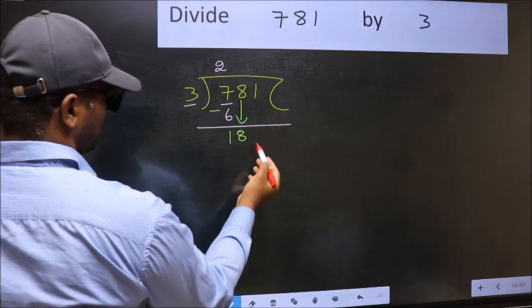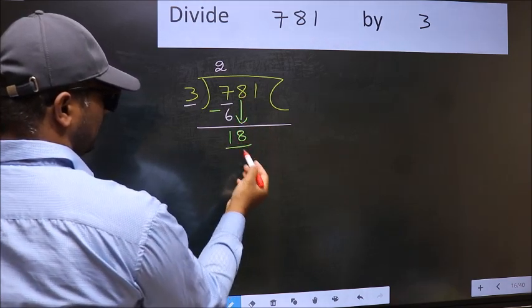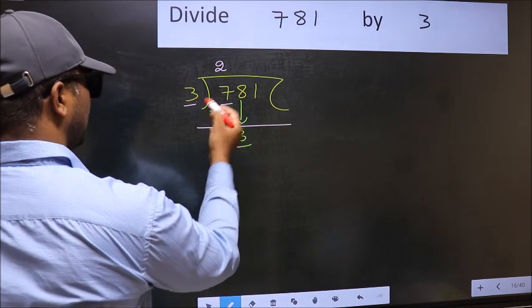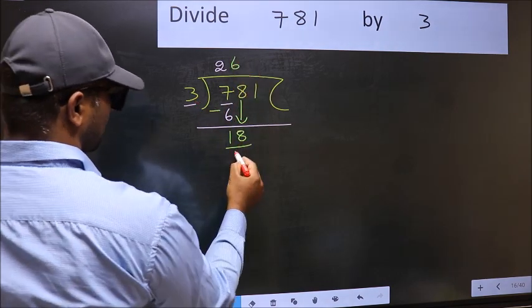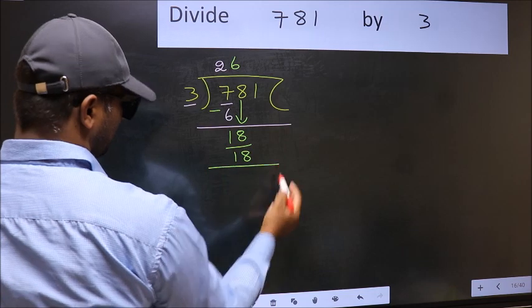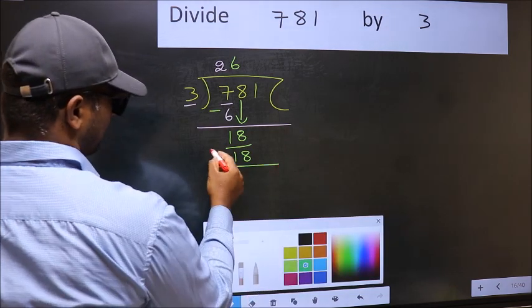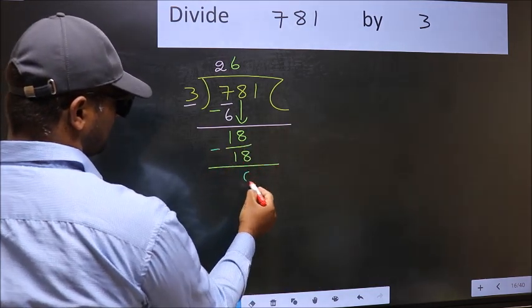So 8 down. Now 18. When do we get 18 in 3 table? 3, 6, 18. Now you should subtract. 18 minus 18, 0.